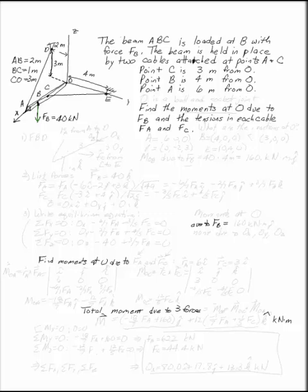I want to start by figuring out where these points are in space. A is going to be at 6,0,0 because the beam goes out into the x-axis. B is not quite that far out, at 4,0,0.